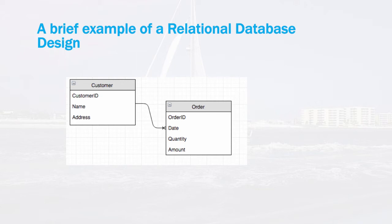In this example, there is a base table called a customer that contains the customer name and address. In addition, there's an order table that contains order information for various customers. The diagram indicates that there's a one-to-many relationship between the customer and the order — that is, one customer can have many orders. ER diagrams allow designers to design and document complex database designs and show the relationship between tables.